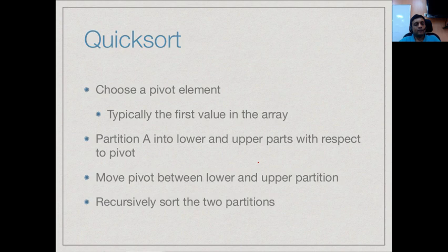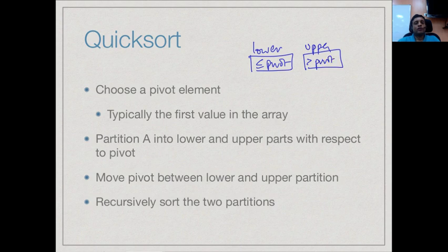So this is Quicksort. Choose a pivot element — for example, you might pick the very first value in the array. Partition the array into the lower part, those less than the pivot, and the upper part, those greater than the pivot. The crucial step is this partitioning, which we will see how to do. Then we move the pivot to the correct place in the middle, and recursively sort the lower part and the upper part. After that, nothing more needs to move.